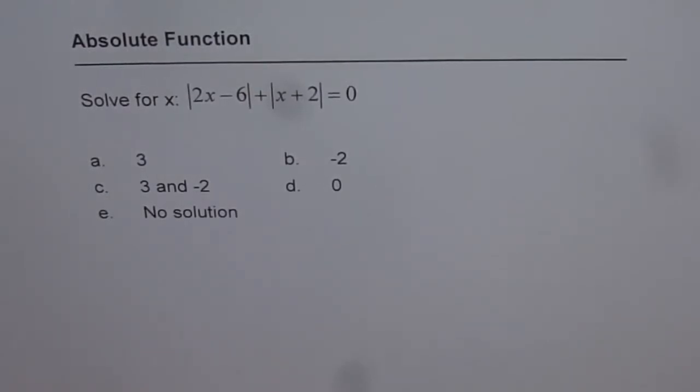Absolute functions. Solve for x: absolute 2x minus 6 plus absolute value of x plus 2 equals to 0.